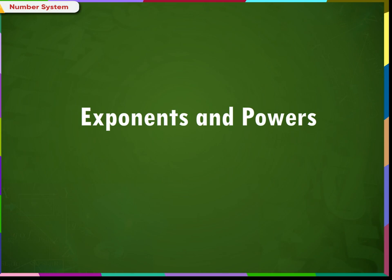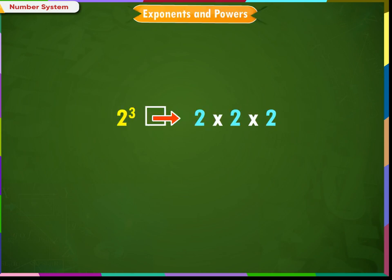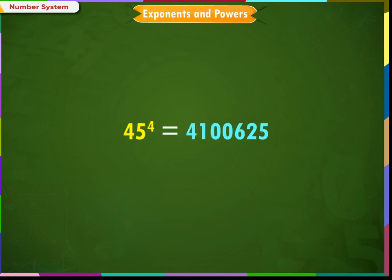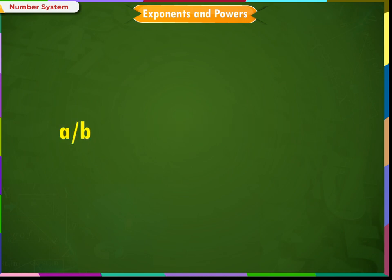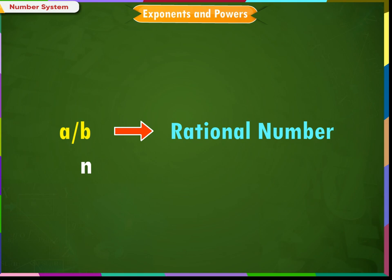Exponents and Powers. Exponents are a short form of repeated multiplication of the same number by itself, and its power refers to the number of times it is multiplied. Exponents are useful to express very large numbers, making them shorter and hence easier to understand and compare. Let a/b be any rational number and n be a positive integer.